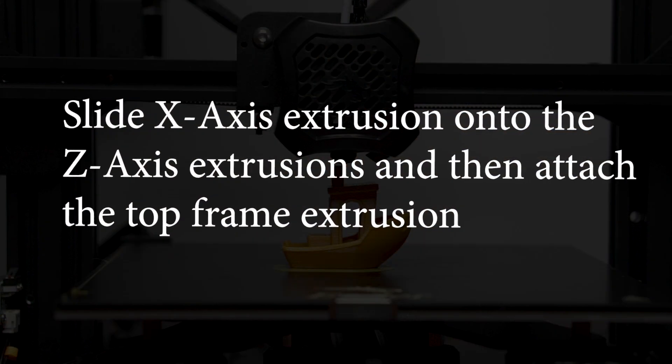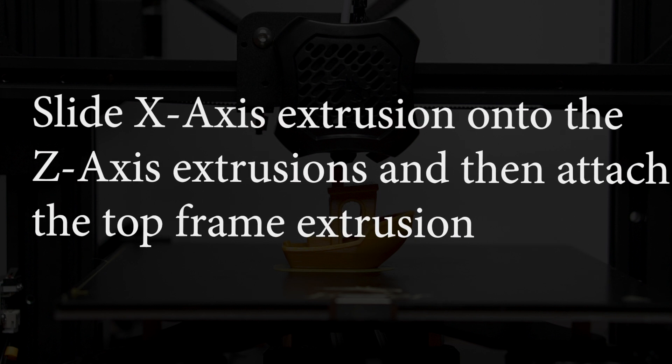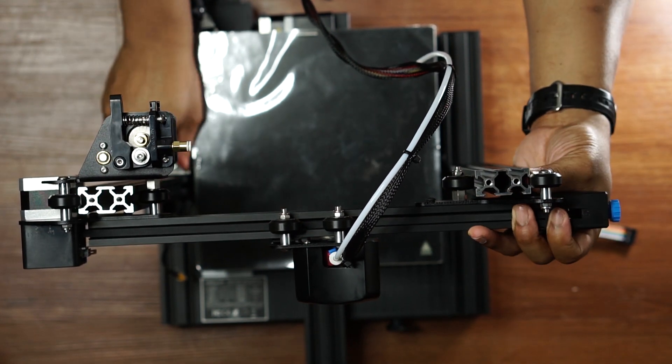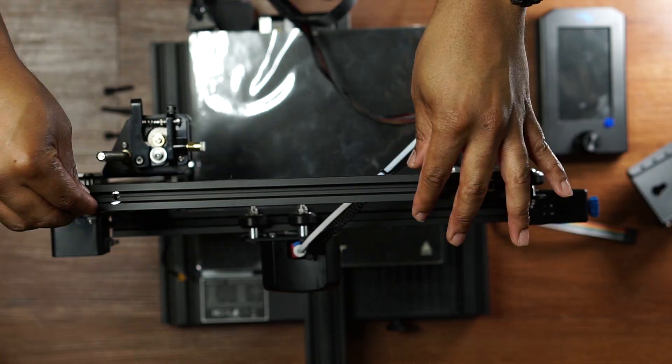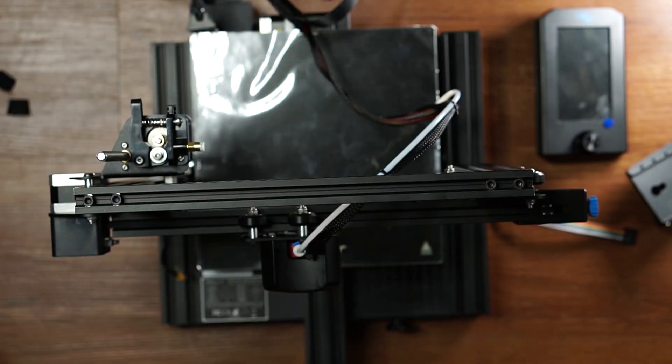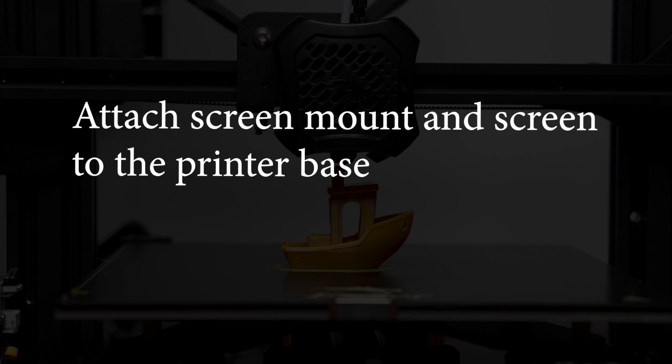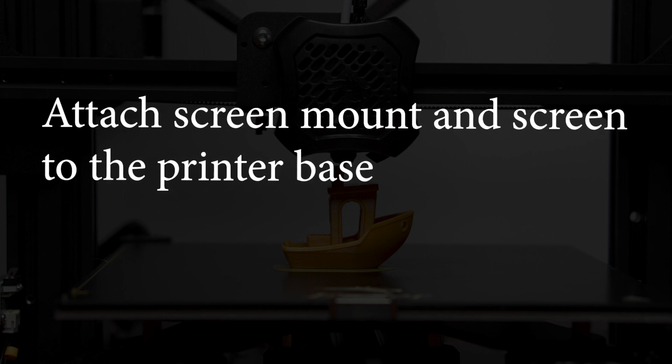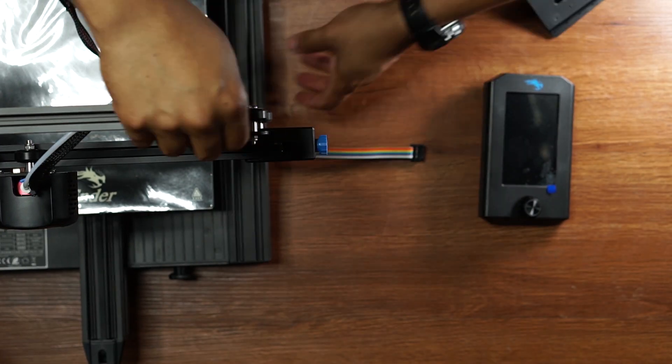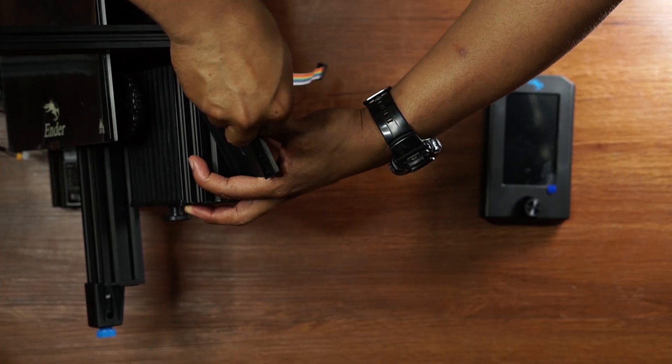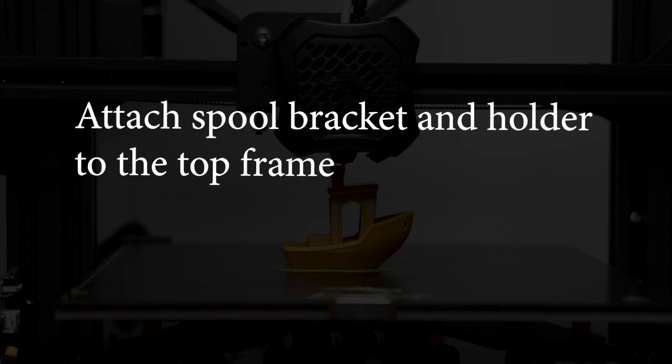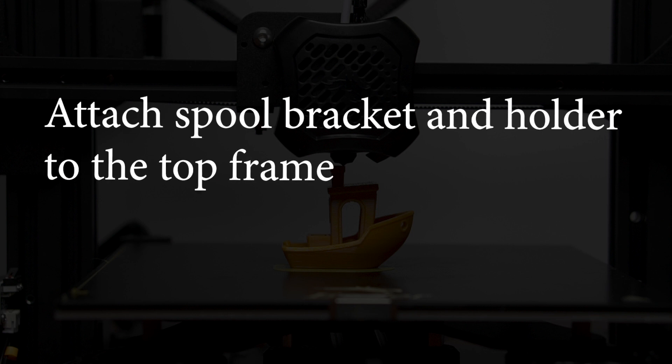Next we're going to be sliding the x-axis onto the z-axis and attaching the top frame. And now that we have the frame all together, we're going to attach the screen to the base. Next attach the spool bracket and holder to the top of your printer.